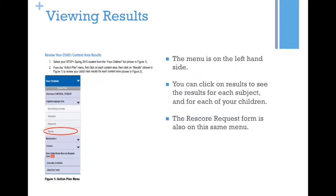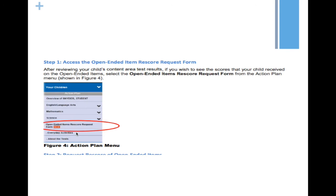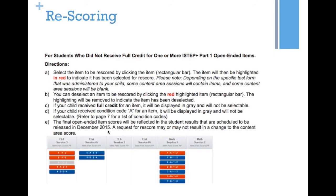Once you get logged in, to view your child's results, you will see on the right-hand side a menu that looks like this. It will have all of your children and it will show the different subject areas that they were tested in. You can click on these little arrows and it will drop down and you'll see different things, including the results. You will also see the open-ended items re-score request form here on this menu. After you view your child's content area results, if you wish to see the scores that your child received on the open-ended items, you can click on the open-ended items re-score request form on the tab and it will open up.